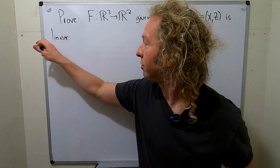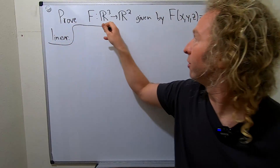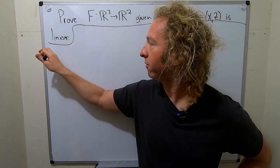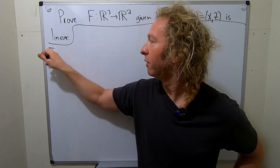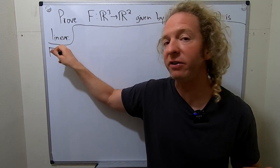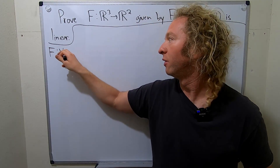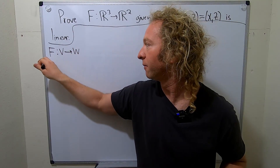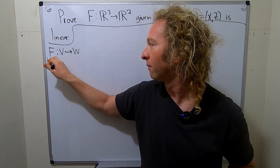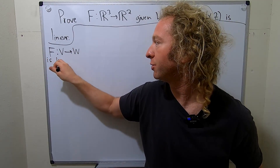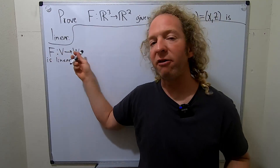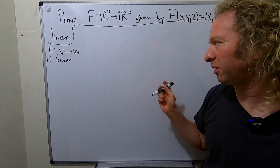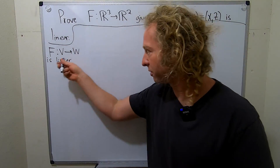So a function f from a vector space, say V to W, is linear. And here we'll assume that V and W are vector spaces over some field, which is typically like the real numbers or the complex numbers.